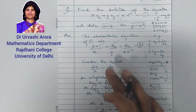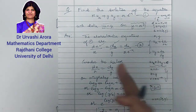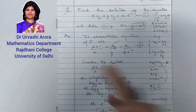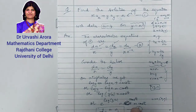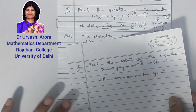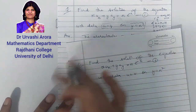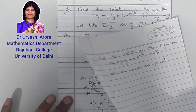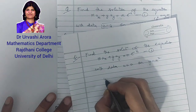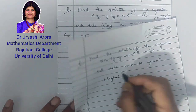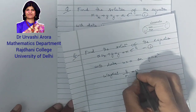We repeat the process by considering another set of ratios to find a second integral independent of the first. I have written the question again on a separate page. The first integral we calculated is y/x = c₁, marked as integral 3.